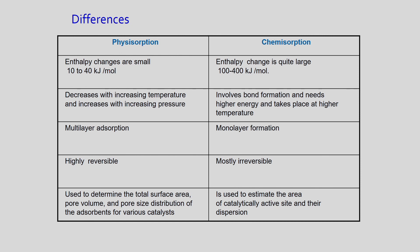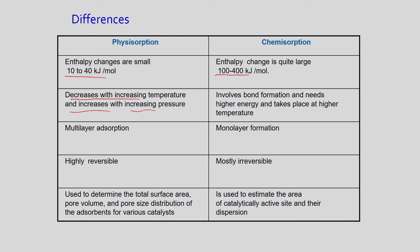The enthalpy change — the heat released — is close to 10 to 40 kilojoules per mole in physisorption, while it is around 100 to 400 kilojoules per mole in chemisorption. Physisorption decreases with increasing temperature and increases with increasing pressure: more pressure pushes more molecules in, while heating causes molecules to leave the system. Chemisorption involves bond formation and needs higher energy, so it requires higher temperature.